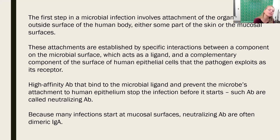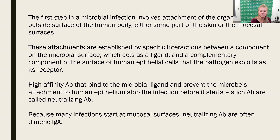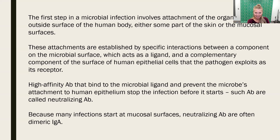The first step of any microbial infection will involve the attachment of the organism to the tissue — on the outside of the human body, some part of the skin, or maybe a mucosal surface in the mouth, the nose, or the eye. These attachments are established through specific interactions between a component on the microbial surface, which is some sort of ligand, and then some sort of receptor on the surface of the epithelial cell. The pathogen is exploiting that receptor because the receptor wasn't made for taking a pathogen, but that pathogen made a ligand that matches the receptor.